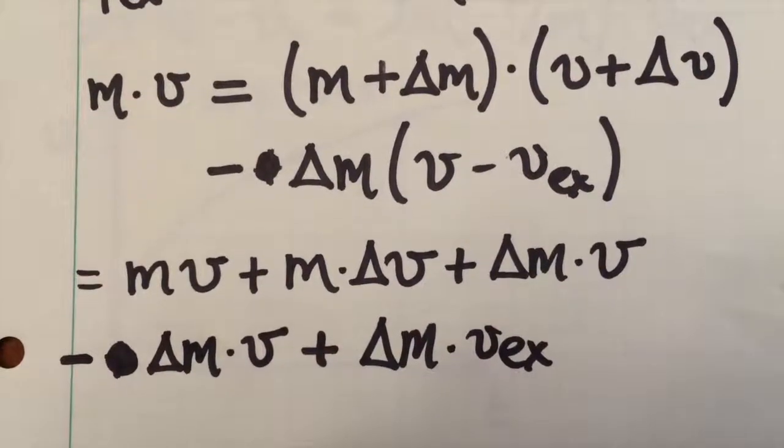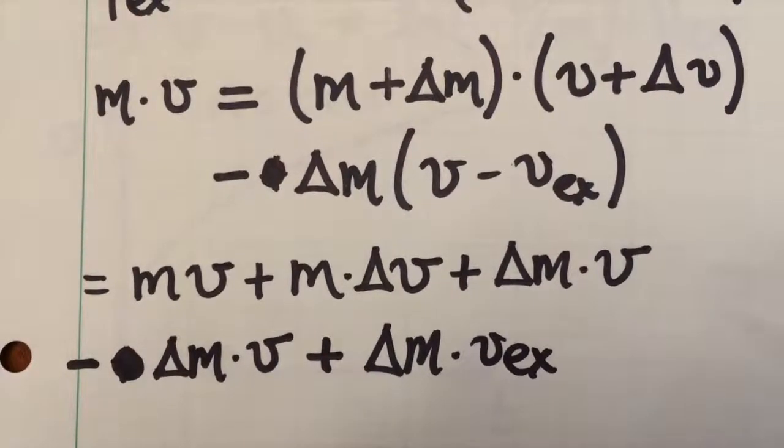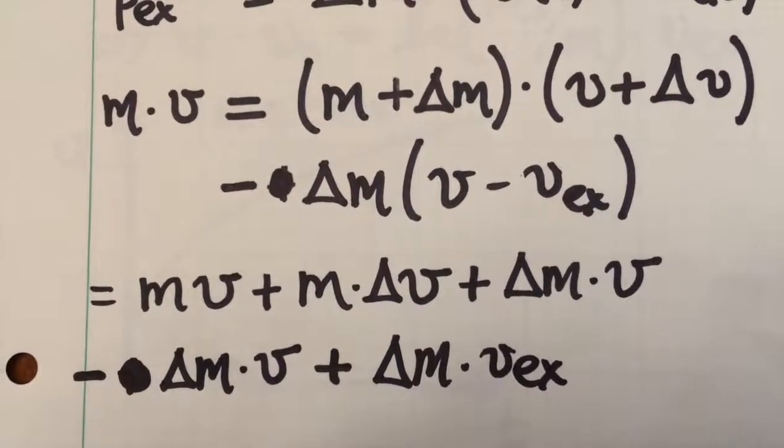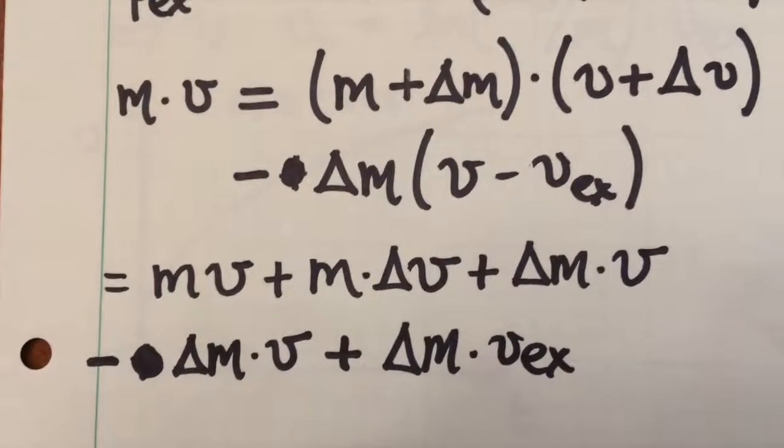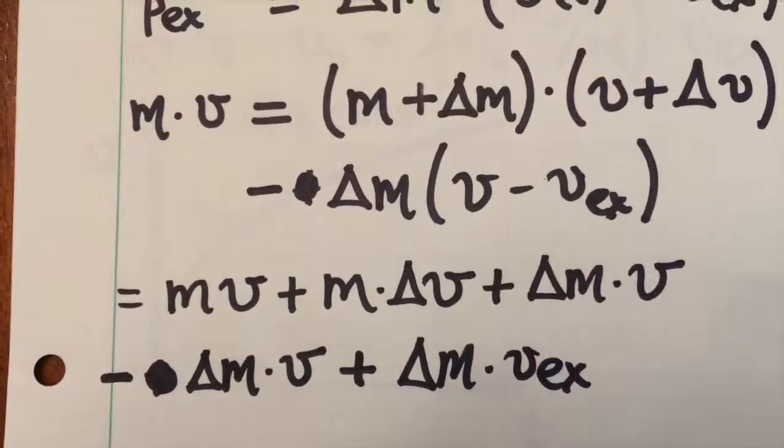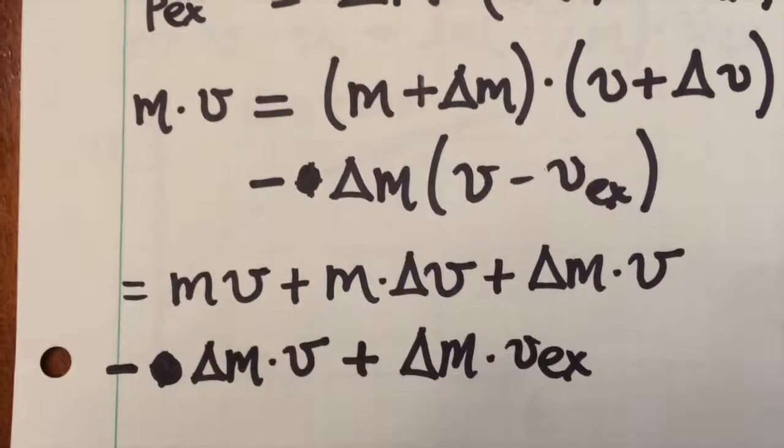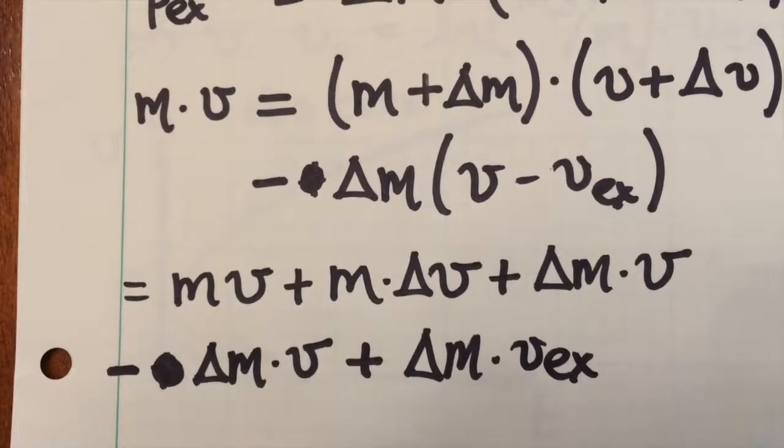If we expand the right-hand side to first order in the delta quantity, remember that delta m and delta v are both small, which means any time we're multiplying a delta m by a delta v, we can ignore that term. We can assume that's smaller than the other terms.